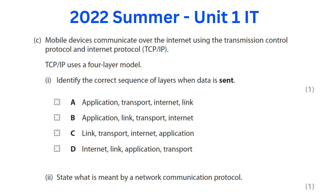Here is a question from the 2022 summer paper. Mobile devices communicate over the internet using TCP/IP, which uses a four-layer model. The question asks to identify the correct sequence of layers when data is sent. The only correct answer is A — the correct order is: application layer, transport layer, internet layer, and link layer. Part two asks: state what is meant by a network communication protocol. A network communication protocol is a set of rules or procedures for transmitting data between computers on a network. That gives you two one-mark answers.